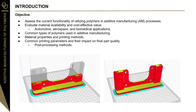The overall objective of the papers in this report is to assess the current functionality of utilizing polymers in additive manufacturing. The papers also investigate the wide availability of polymer materials and their cost. Additive manufacturing is currently being utilized heavily for automotive, aerospace, and biomedical applications. The papers also address common types of polymers, material properties, and printing methods used in additive manufacturing. Common printing parameters and their impact on final part quality, along with any necessary post-processing methods, are also assessed.